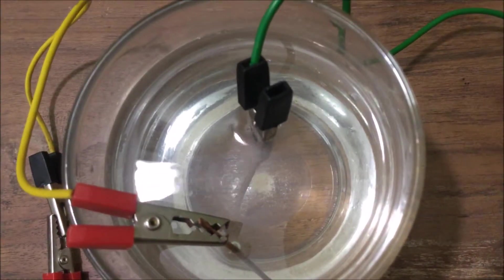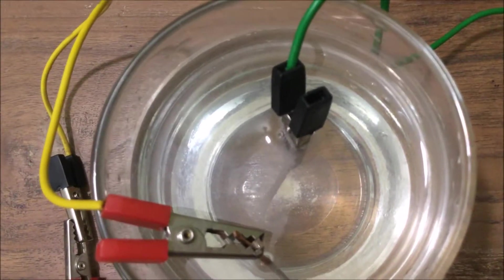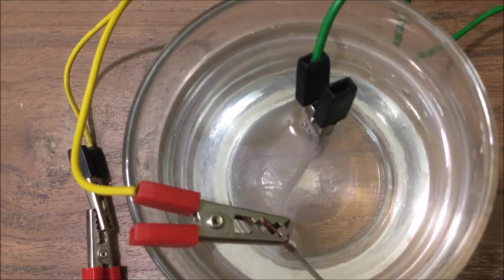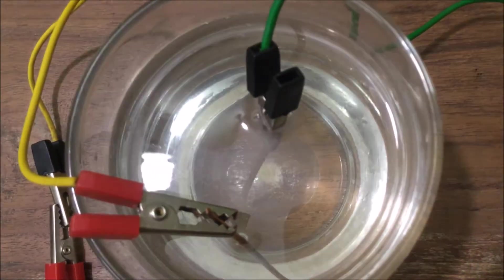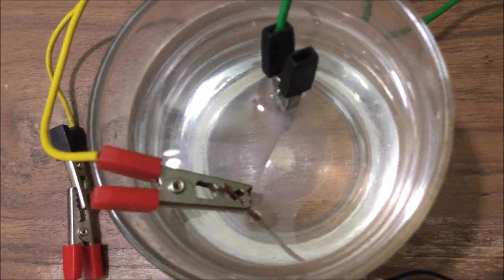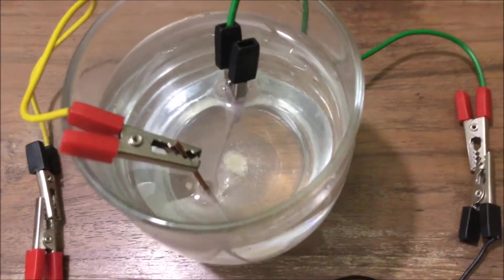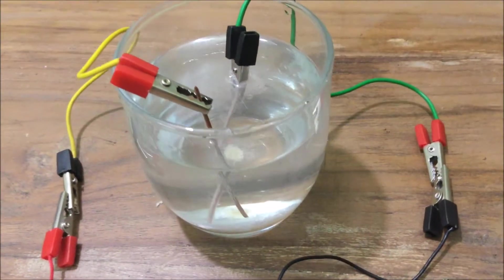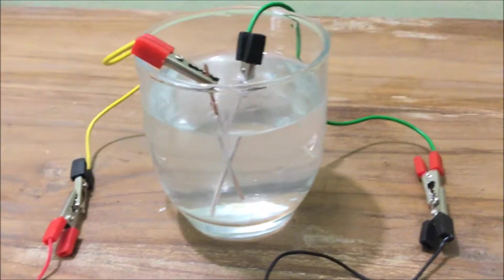And the rod on the right side is the anode and that is gathering chlorine gas. The gas bubbling on top of the glass is hydrogen gas because we know that water is H2O, hydrogen and oxygen.